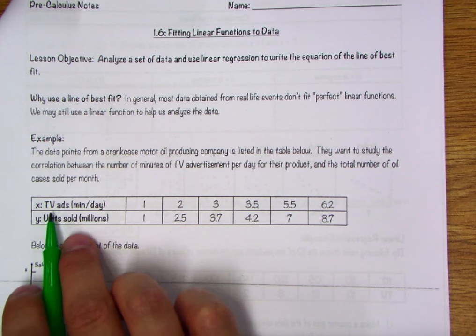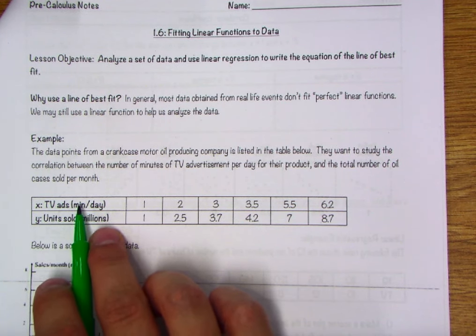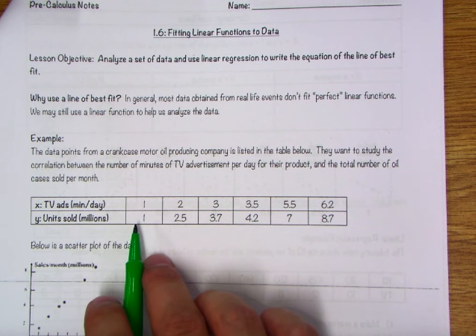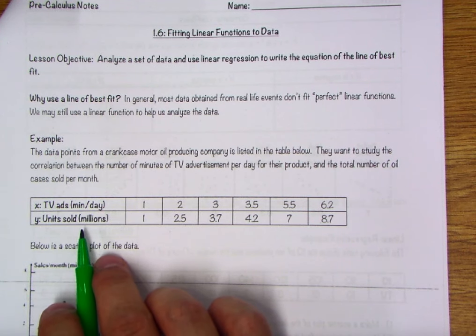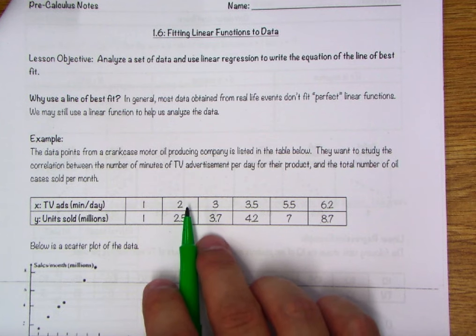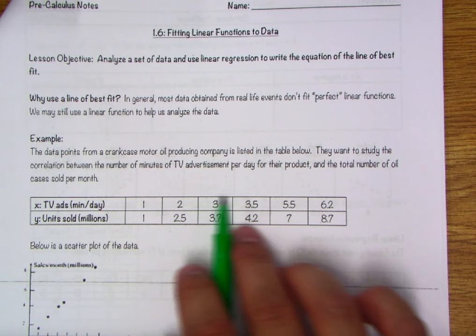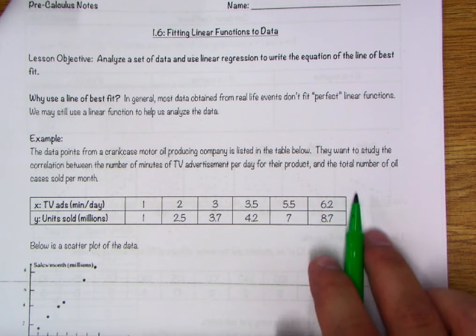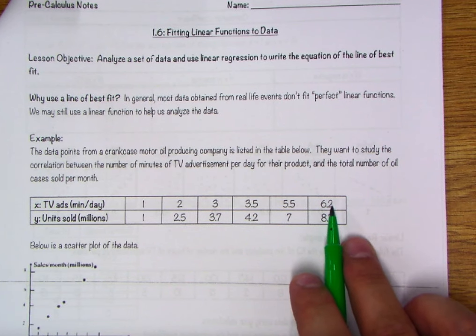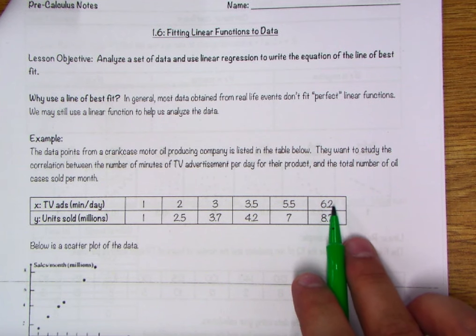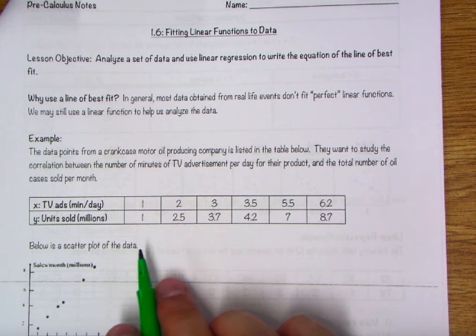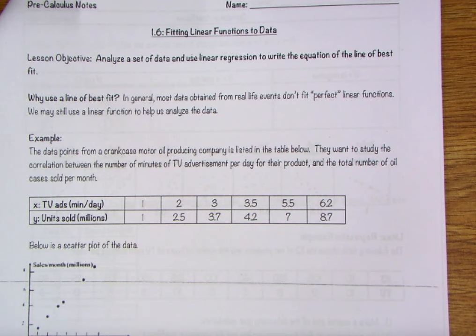So what they found is that if there is one minute per day of TV ads, then they would sell one million units over the course of a month. On the other hand, if there were two, it would take us up to 2.5 and so on and so forth, such that by the time we get to 6.2 minutes per day of ads, they were actually selling almost nine times what they were down at just one minute per day.